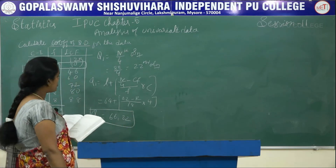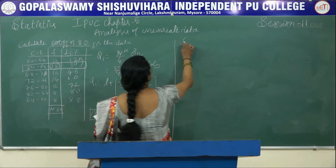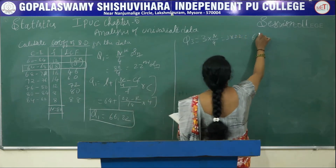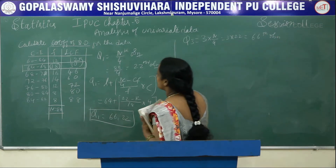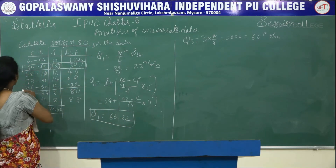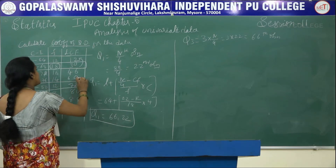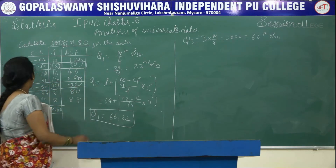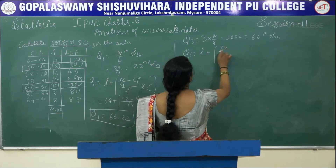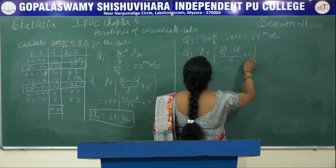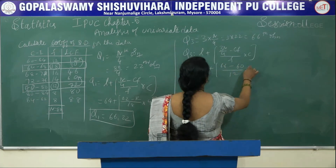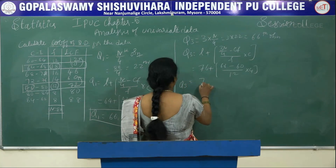Q1 is 66.22. Similarly find Q3: Q3 is 3 times N by 4, which is 3 into 22, giving the 66th observation. The 66th observation falls in LCF value 72, so we block that row. CF is 60, F is 12, lower limit L is 72, and class width C is 4. Q3 is L plus 3N by 4 minus CF by F into C: 76 plus 66 minus 60 divided by 12 into 4, giving Q3 equal to 78.